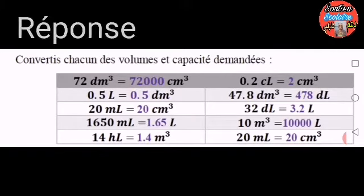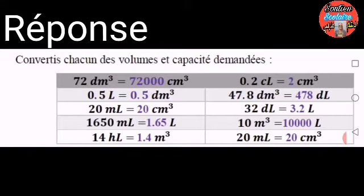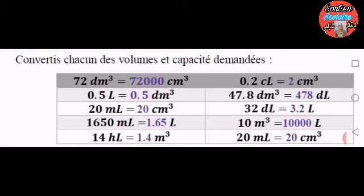La réponse. 14 hectolitres égale 1,4 m³. 0,2 centilitres égale 2 centimètres cubes.